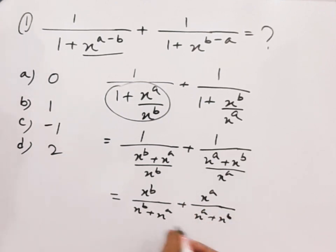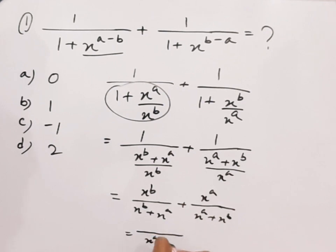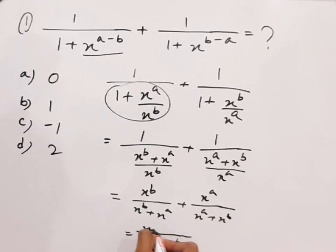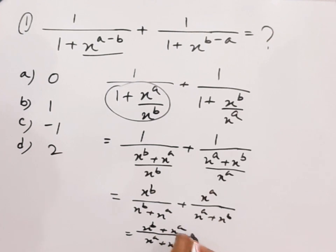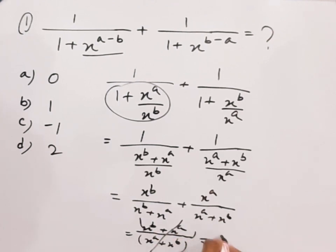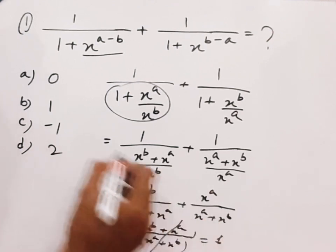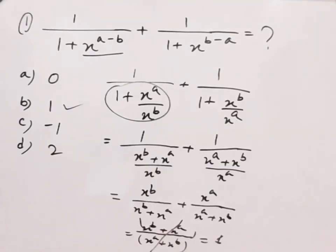After that, the denominator is x^a plus x^b, and the numerator will be x^b plus x^a. Therefore we can cancel them easily. So therefore, 1 will be the answer.